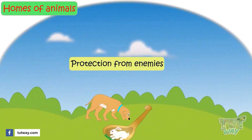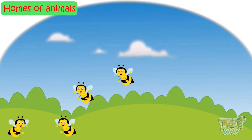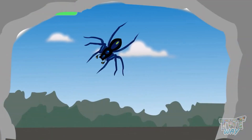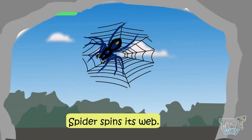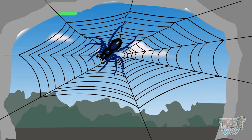Some animals make their own homes. Honeybees make hives and live in them — these are called beehives. A spider spins its web using a sticky material produced by its own body.